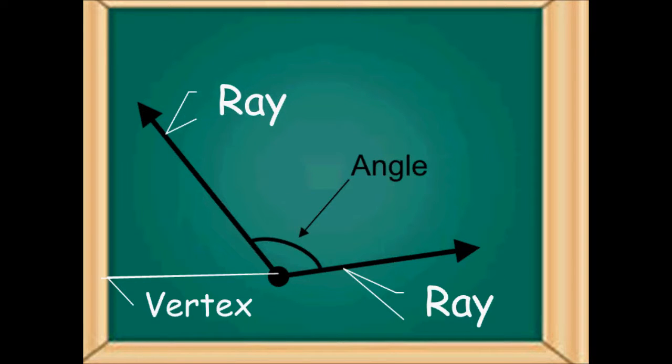So we have the vertex, which is the point that joins the two rays, right? And the space between them is the angle. The rays are also known as sides or arms. So the rays, the vertex, and the space between them is the angle.